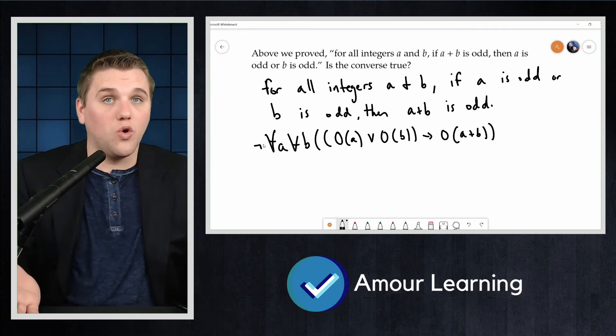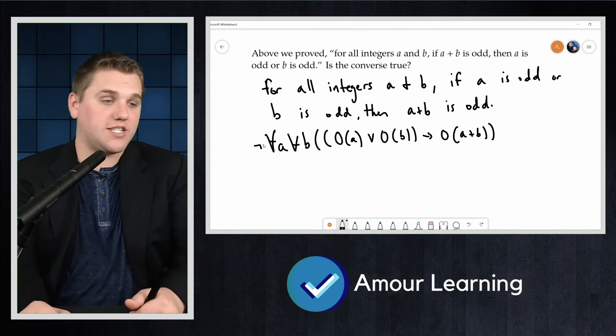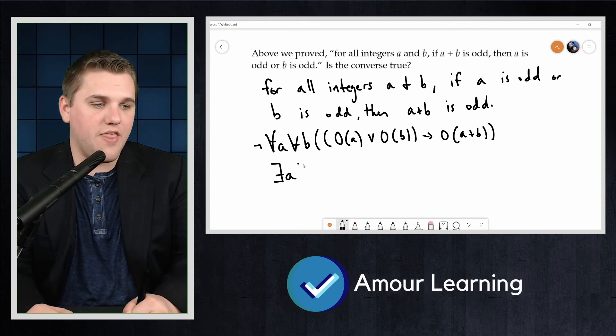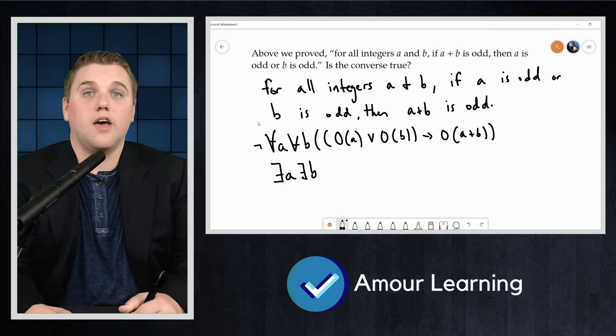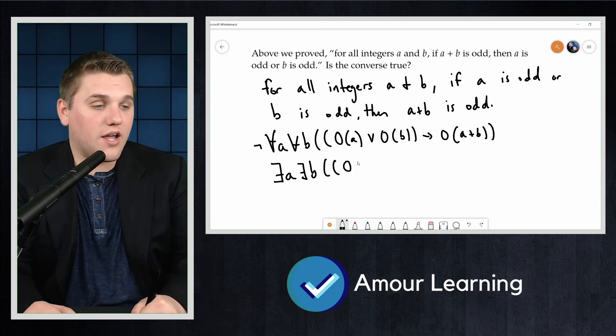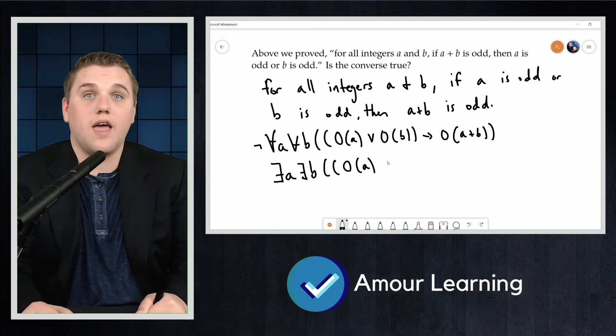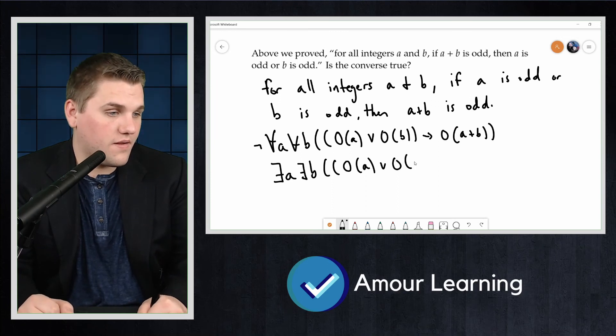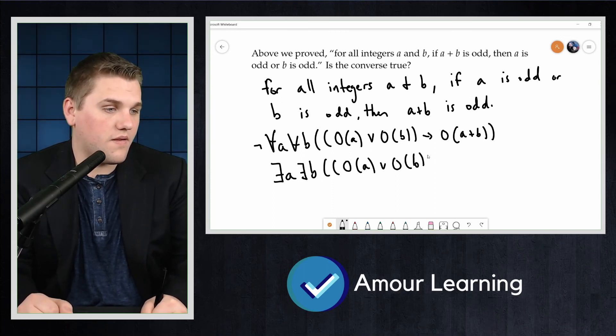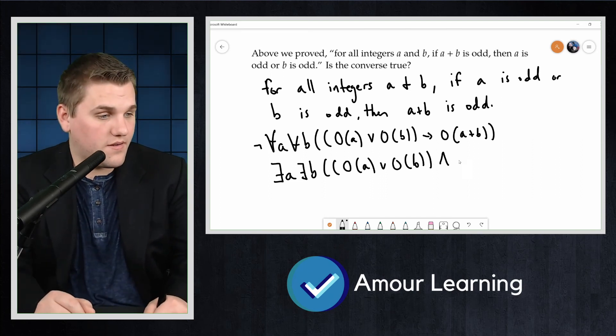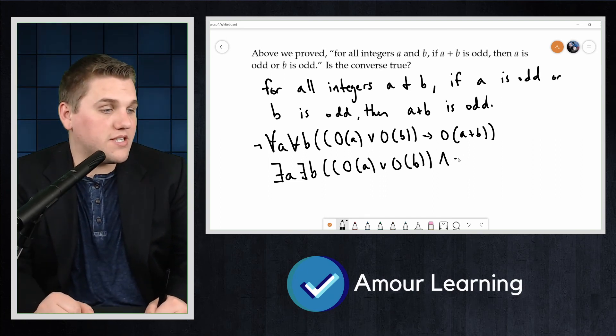Simplifying using the rules from the previous videos that we've discussed, this means that there exists an a and there exists a b such that a is odd or b is odd, and a plus b is not odd.